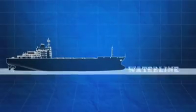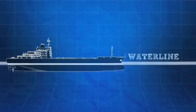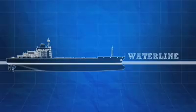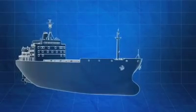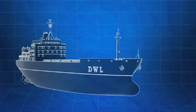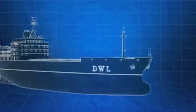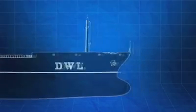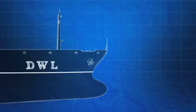The waterline is the intersection of the surface of the water a ship is floating in with the sides of the ship's hull. When a ship is designed, the naval architect determines the design waterline, or DWL, that represents the waterline of a ship under full load or maximum draft conditions on an even keel.